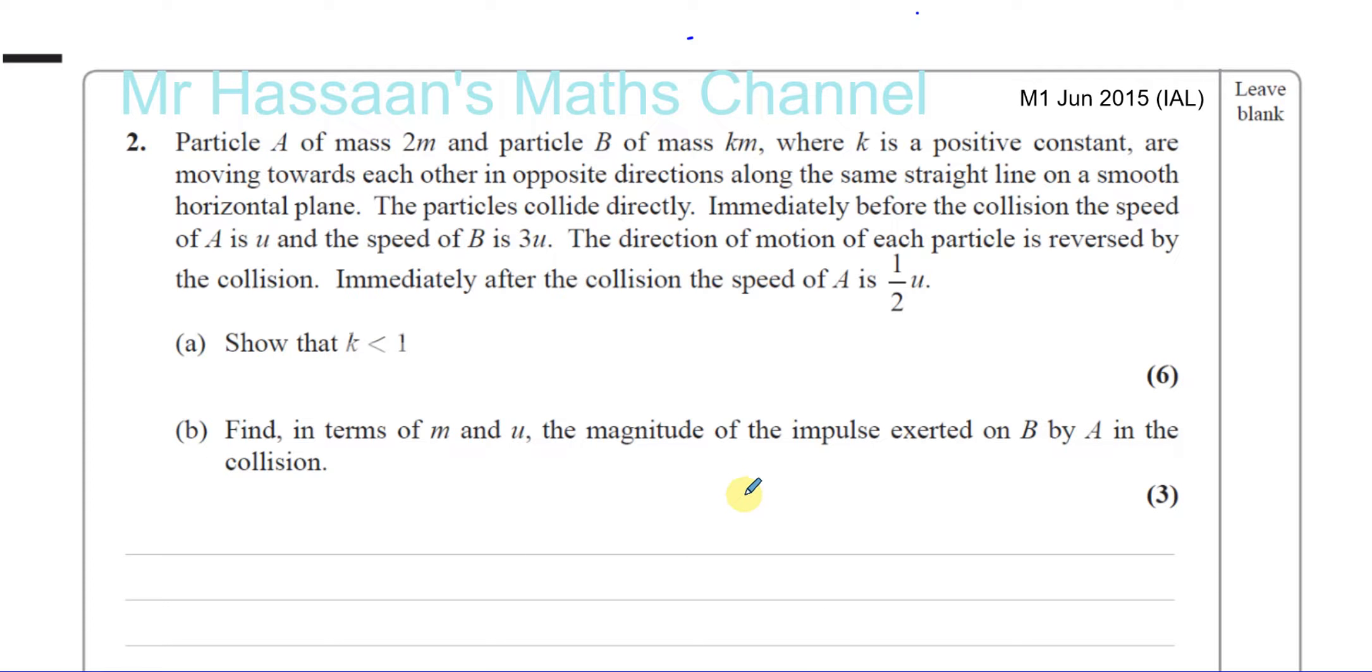Question number 2 from M1, 2015 International A-Level. Particle A of mass 2M and particle B of mass KM, where K is a positive constant, are moving towards each other in opposite directions along the same straight line on a smooth horizontal plane.